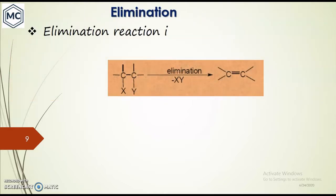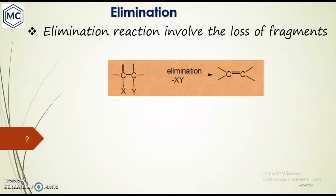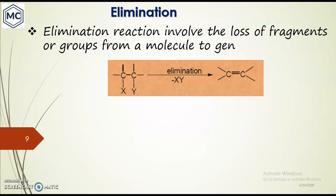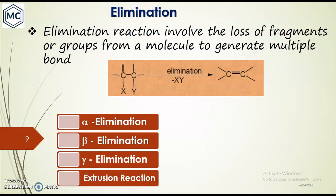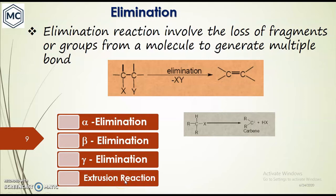In summary, a strong base favors elimination over substitution, a bulky nucleophile or base favors elimination over substitution, and higher temperature usually favors elimination over substitution. Now let us consider what elimination is and what the types and mechanisms are. Elimination reaction involves the loss of a fragment from a molecule to generate a multiple bond.